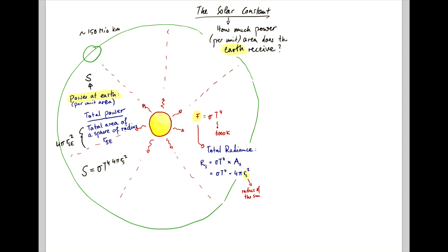4 pi r_s squared, and divided by the total area of the sphere of the size of the orbit of the Earth. And that's 4 pi r_SE squared.